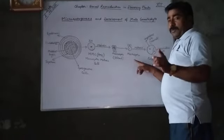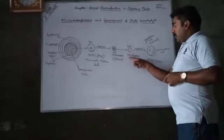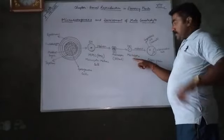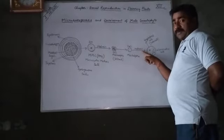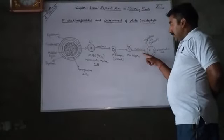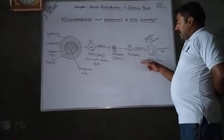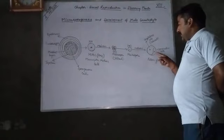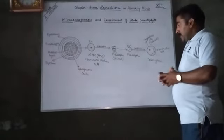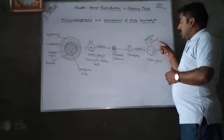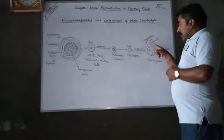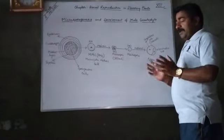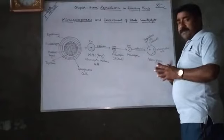These microspores are haploid and they undergo mitosis cell division. As a result of mitosis in the microspores, two unequal cells are formed: one larger and one smaller, but both cells remain joined together. The larger cell is called the vegetative cell or tube cell — it is called the tube cell because after pollination, this vegetative cell forms the pollen tube, which is an important structure that helps in fertilization. The smaller one is called the generative cell.